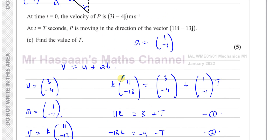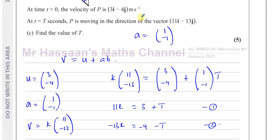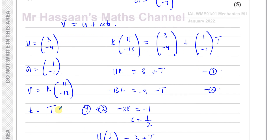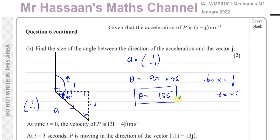The key insight for part c is that the velocity is not equal to (11, −13) but is some scalar multiple of it, because we're told the direction — not the magnitude. Writing the velocity as k(11, −13) allows us to form two equations and solve for t. That completes part c of question six.